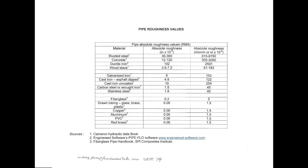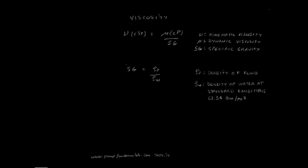Here are some typical pipe roughness values. This last formula is the relationship between absolute or dynamic viscosity and kinematic viscosity. Sometimes you may find the viscosity of a liquid in one form or another and you will need to convert. Also, here is the definition of specific gravity.